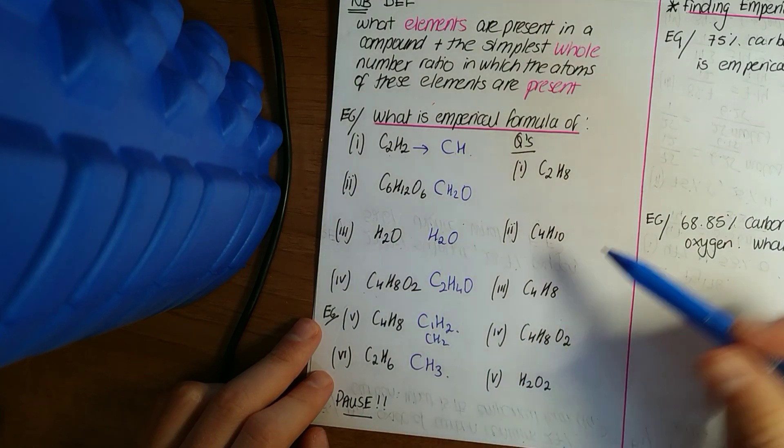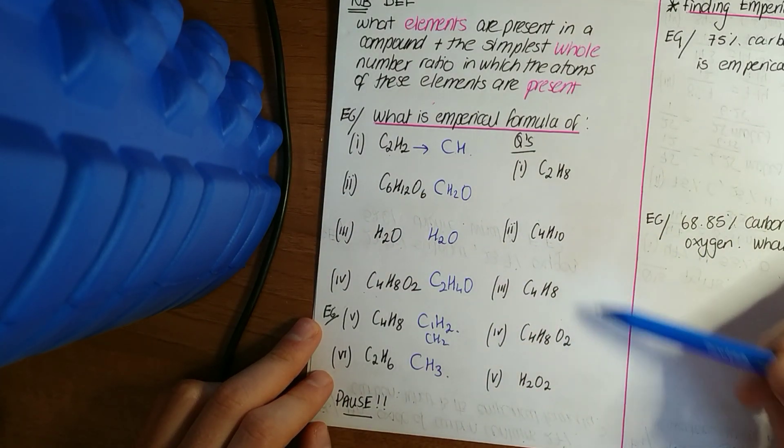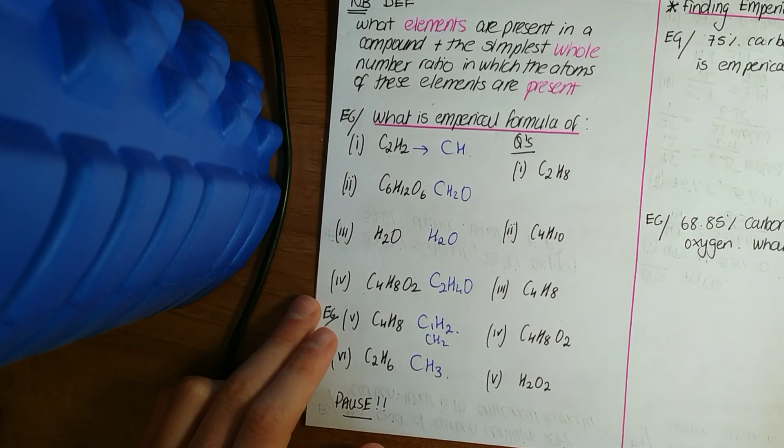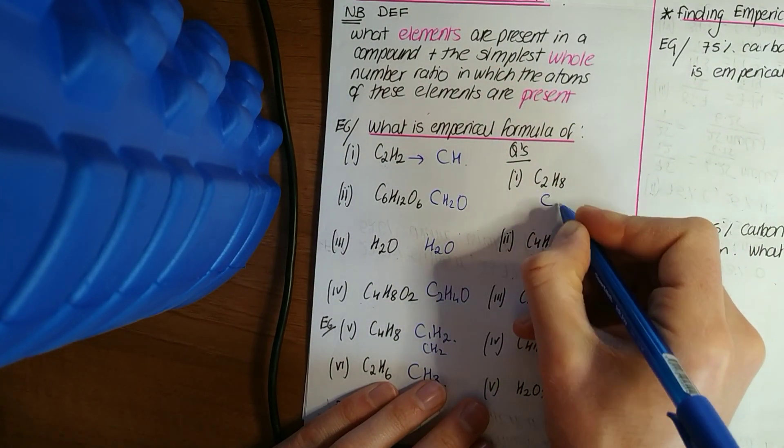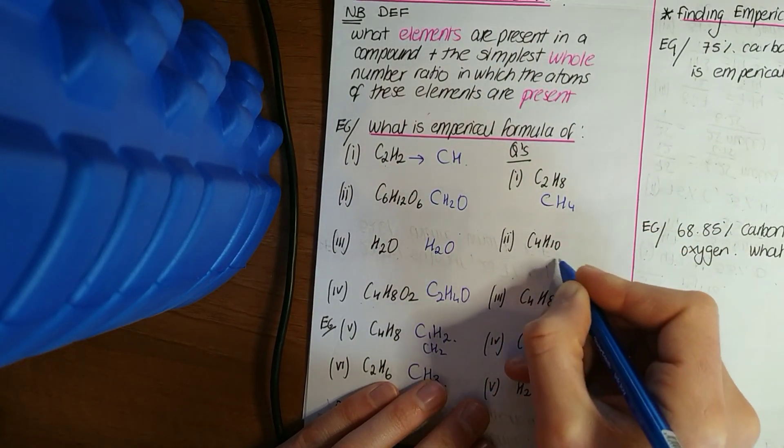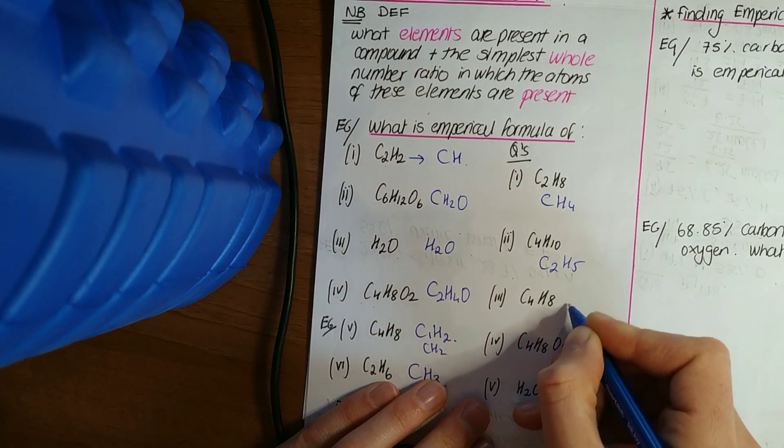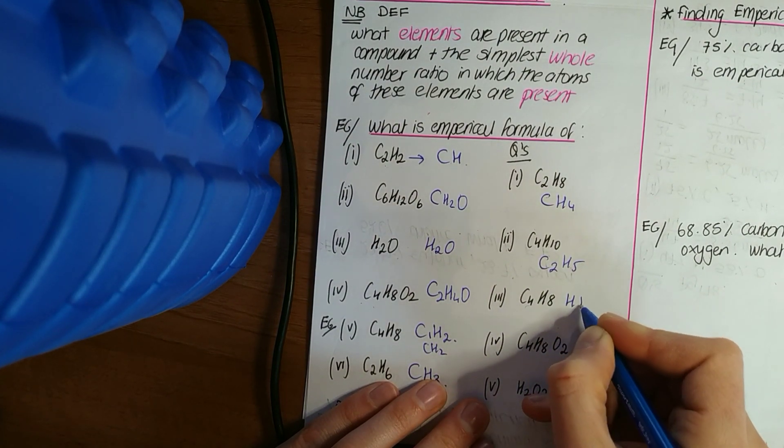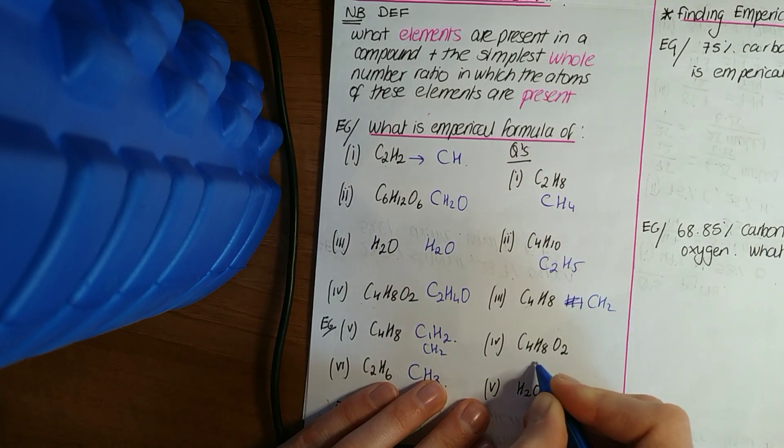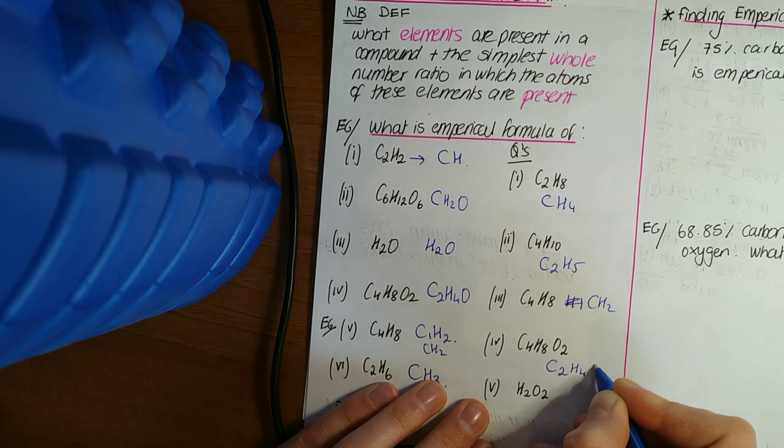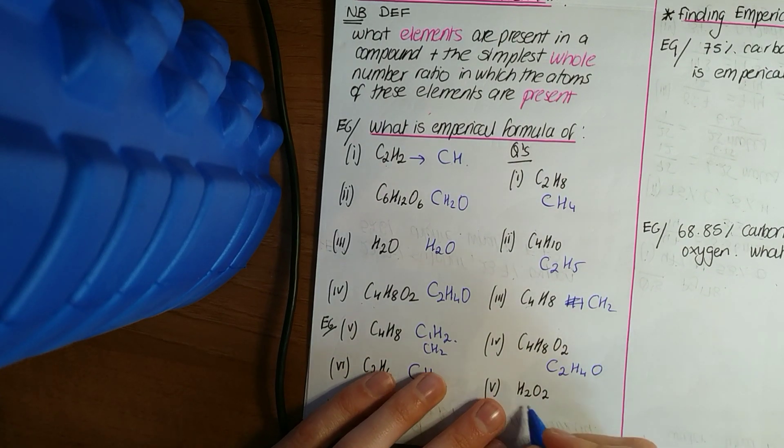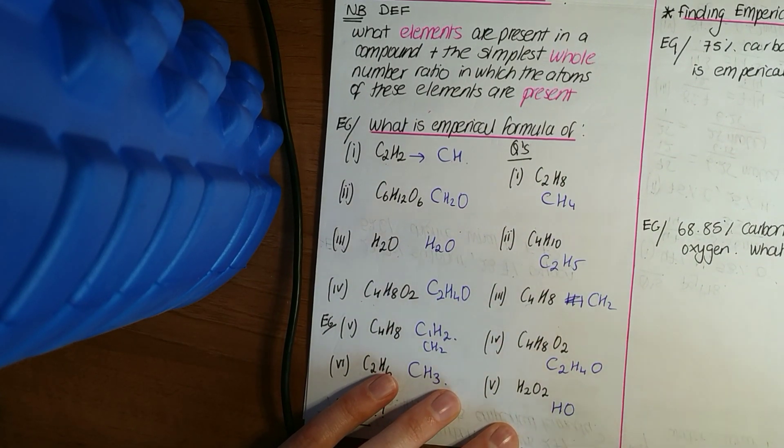Again I've mentioned, pause and try these ones here yourselves. And then did you get the same answers? I'll just write in the answers beside them now. So CH₄: 2 is the highest common factor there, so C₂H₅. 4 is the highest common factor there, so CH₂. 2 is the highest common factor there, so C₂H₄O. And then hydrogen peroxide: 2 is the highest common factor there, so HO.